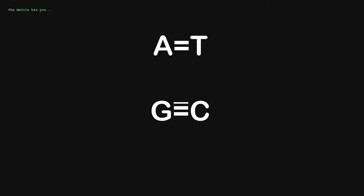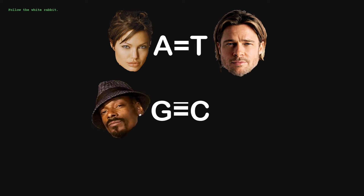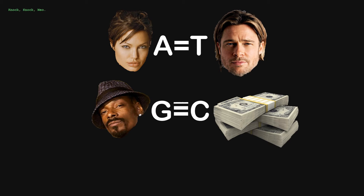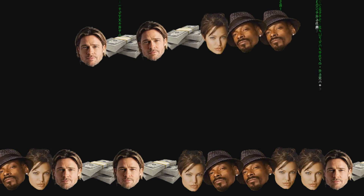This is Neo, and I'm going to teach you about next-generation sequencing alignment. Normally, nucleotides are called A, T, G, and C, but that's boring. So instead we're going to use Angelina Jolie, Brad Pitt, Snoop Dogg, and Cash. Let's enter the matrix.